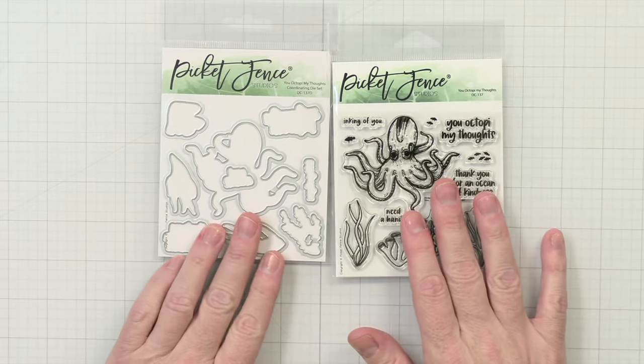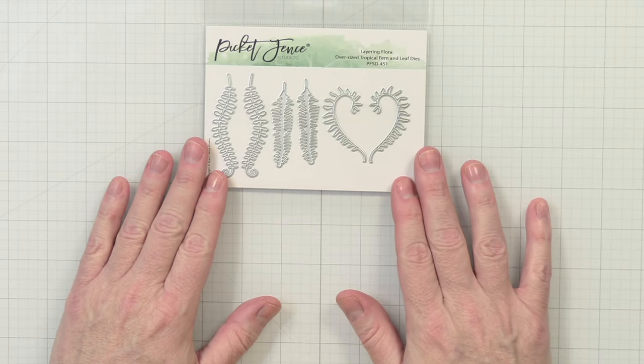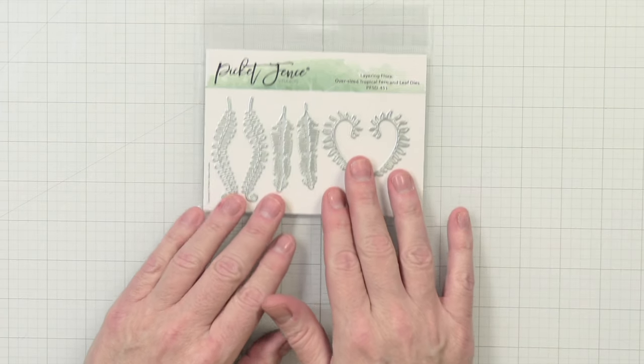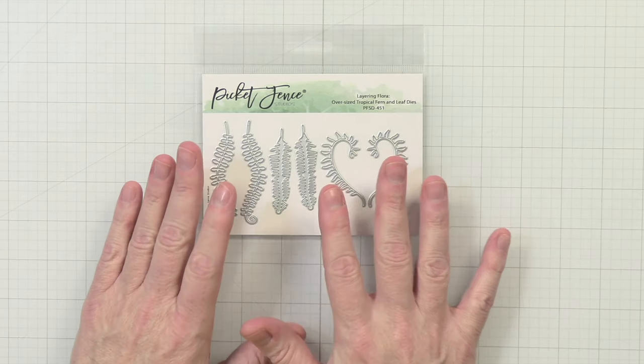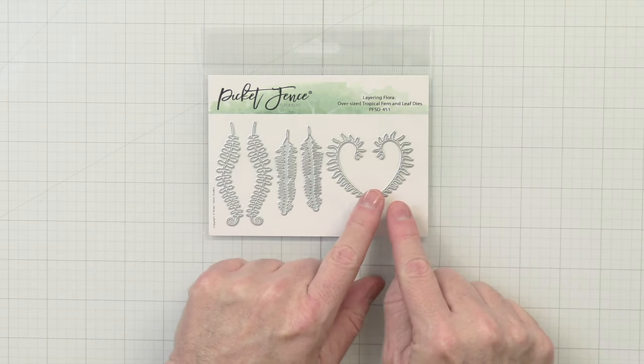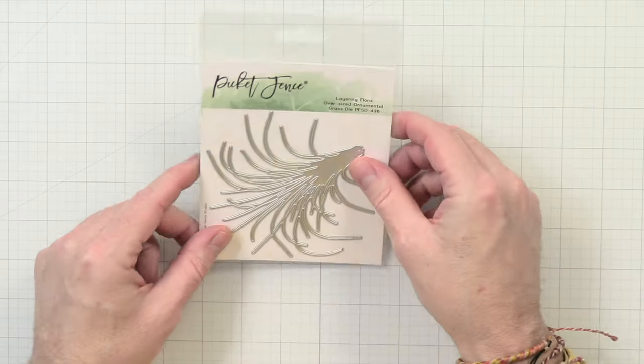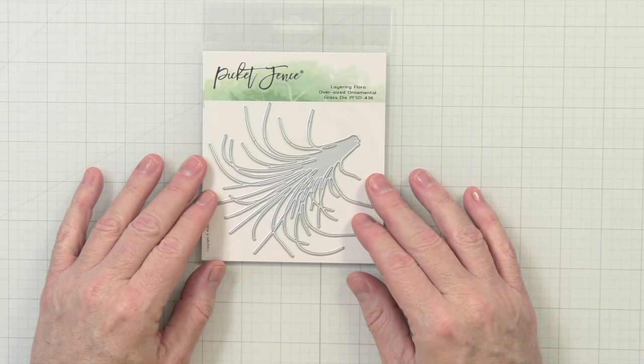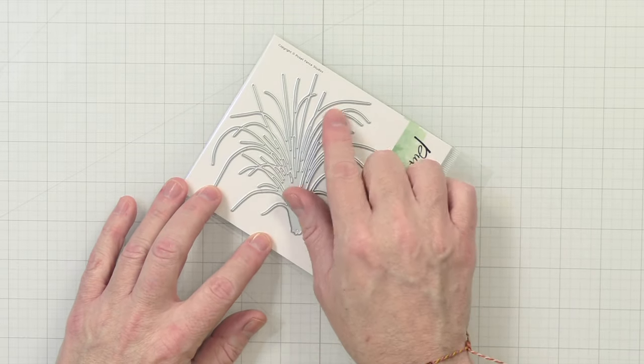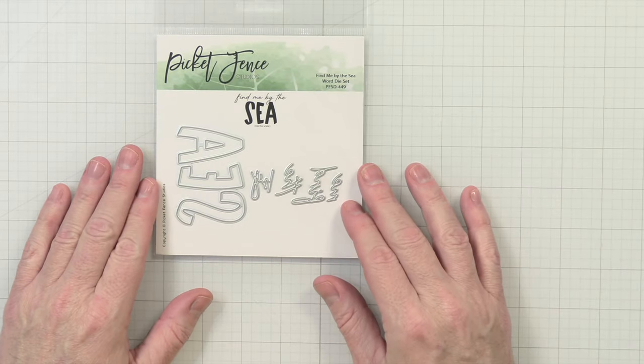Up next we have the layering flora oversized tropical ferns and leaf dies. Really enjoy these. These would be great on their own just to make like a cluster. Really great. Already have an idea that I'm going to make with these, but I also love this one because you can make this into a heart. I think that's freaking adorable. We have the layering flora oversized ornamental grass die. I'm going to flip it around this way so you guys can see it. Really nice, takes up a lot of space on a card. I think this would look really great.